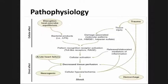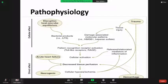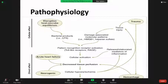Moving to the pathophysiology of shock: the initial physiological responses in shock are driven by tissue hypoperfusion and a developing cellular energy deficit. This imbalance between cellular supply and demand leads to neuroendocrine and inflammatory responses. The specific responses will differ based on the etiology of shock.